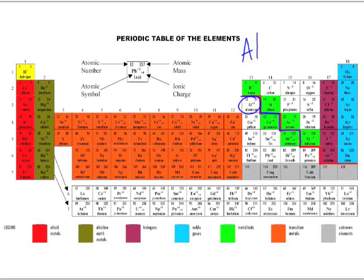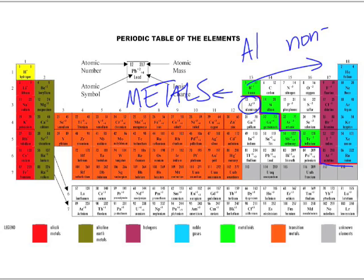If you look at this staircase, that separates the metals on this side and the non-metals on this side. Here are the metalloids. They're the ones that lie along the aluminum ladder.